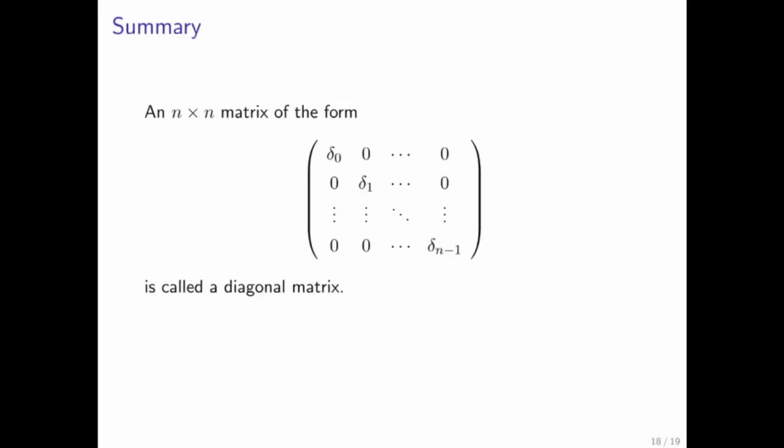We just go straight to the summary, which says, if you have a matrix with this special structure, where the diagonal equals some values, and the off-diagonal elements are all equal to 0, then that matrix is called a diagonal matrix.